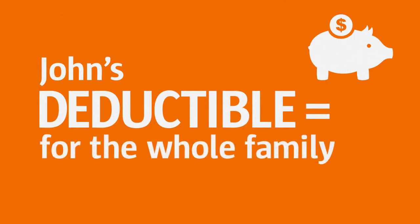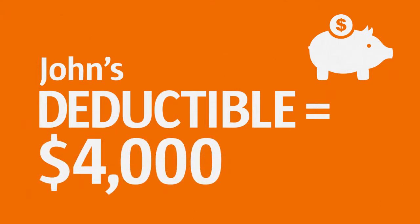John's deductible, for his whole family, is $4,000, with each member contributing toward that amount until the deductible is met.